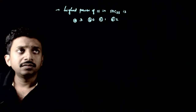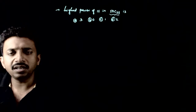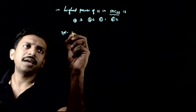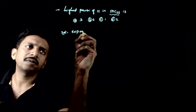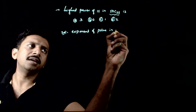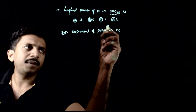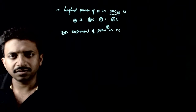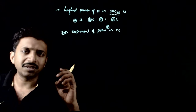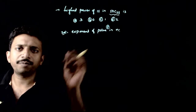Welcome students. This question asks you to find the highest power of 18 in 50C25. This is a question based on the exponent of a prime in n factorial, a concept you get in the topic of permutations and combinations.